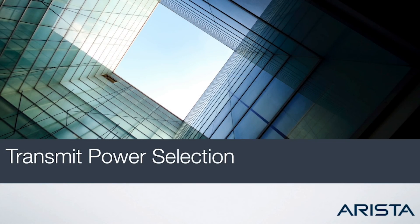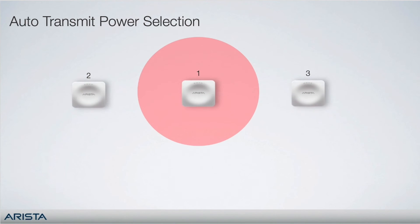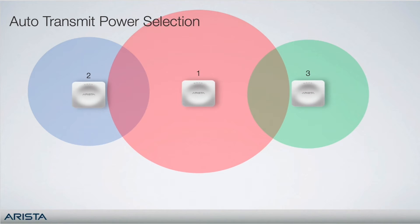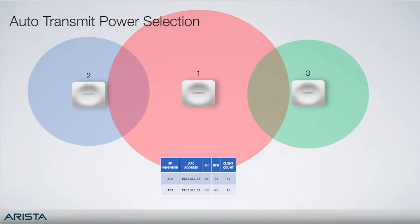Arista APs will automatically adjust their transmit power to minimize interference with neighboring Arista APs. Via IAPC, APs inform each other how loud they are to each other, and this information is added to the RF neighbor table. Once this information is added, the AP then makes a decision to increase or decrease its transmit power based on how loud it is to its neighbors and to how many neighbors it is loud to.